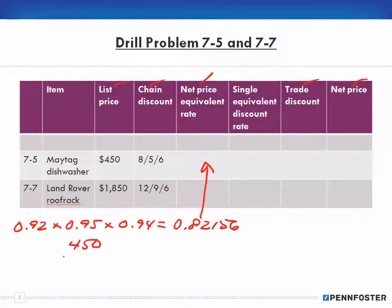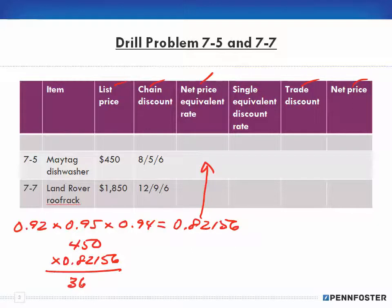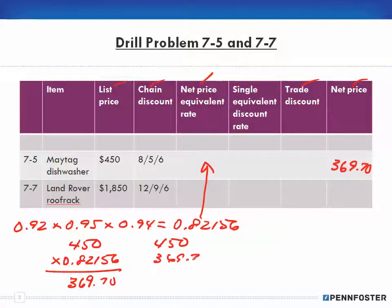I take the list price of $450 and multiply it by 0.82156, which gives me my net price of $369.70. The difference between the two is my discount amount of eighty dollars and thirty cents.